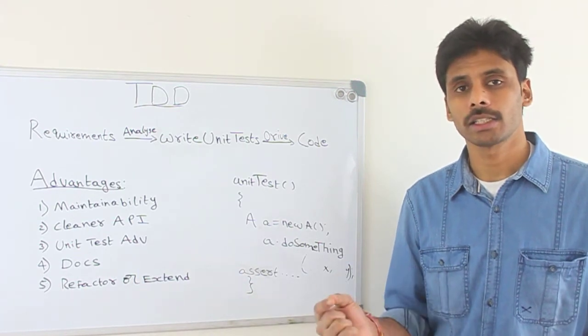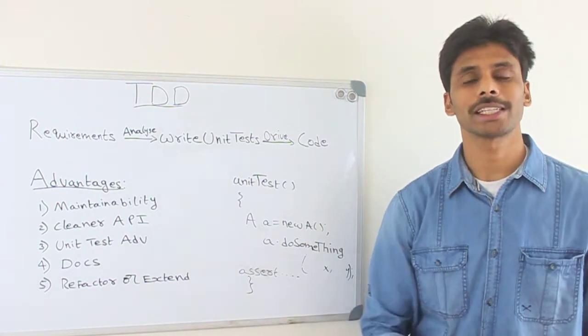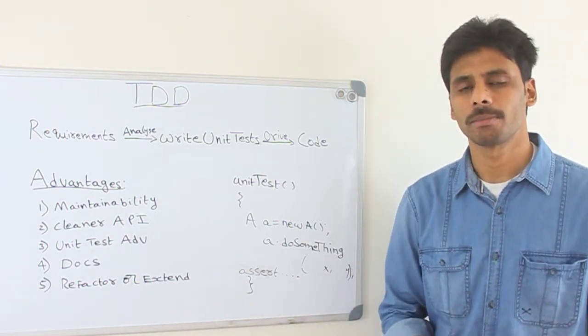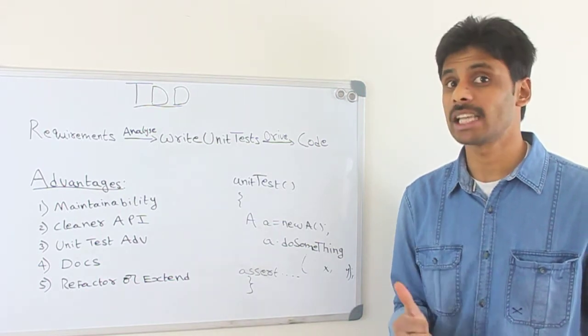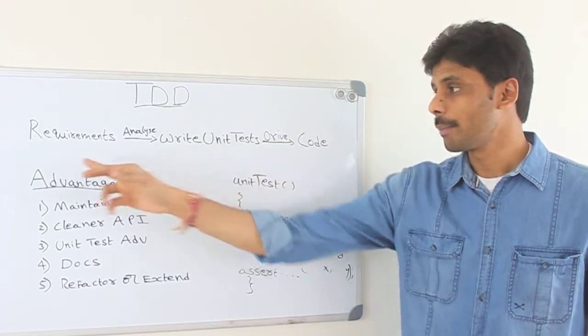They write their test cases from the requirements. Then when the feature or application is ready, they're going to test that particular feature against the test cases to make sure it meets the requirements. TDD has the very same advantage. You will drive your application code from the requirements.